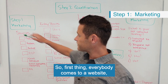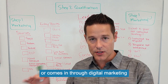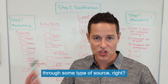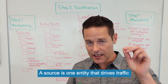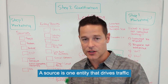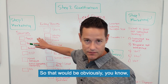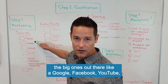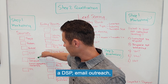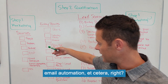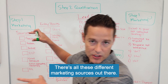Everybody comes to a website or comes in through digital marketing through some type of source. A source is one entity that drives traffic to a business — the big ones out there like Google, Facebook, YouTube, a DSP, email outreach, email automation, et cetera. There are all these different marketing sources out there.